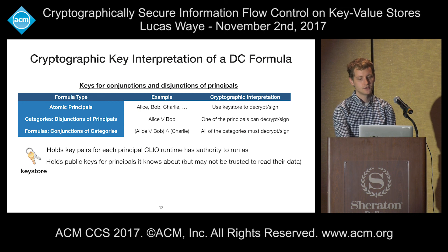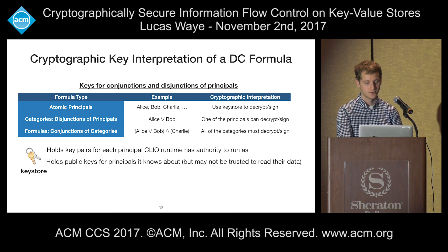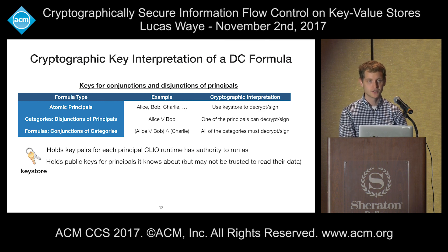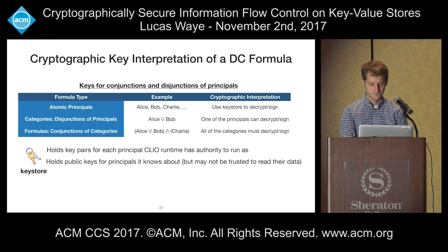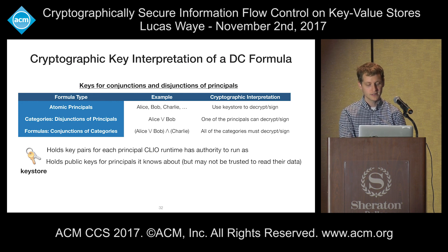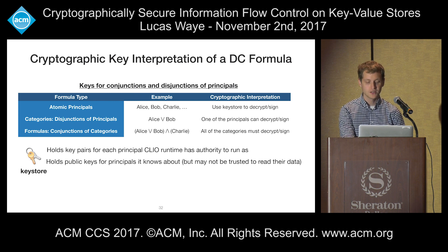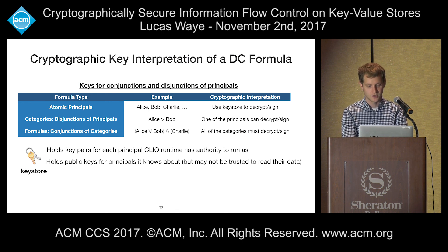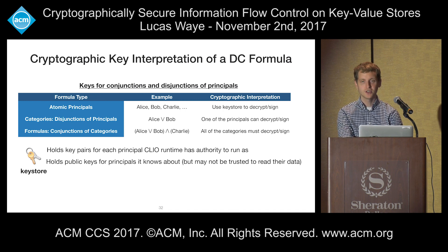Now let's talk about which private keys are used for signing and decrypting. Each component of a DC label is made up of formulas, which are conjunctions of categories, and in turn these categories are made up of disjunctions of principals. Principals are the atomic users in the system, and each user has their own private key stored in the Clio key store. The key store contains key pairs for each principal the runtime has the authority to run as, and only the public keys for principals it knows about. When there's a disjunction of principals, only one of the principals needs to be present to decrypt the data. For conjunction of categories, all categories must be used to decrypt or sign the value, done via layered encryption for encrypting and a chained signature for signing.